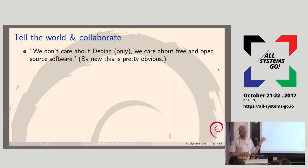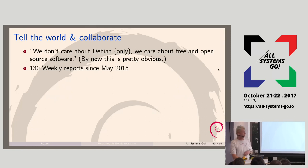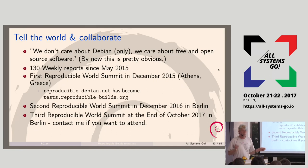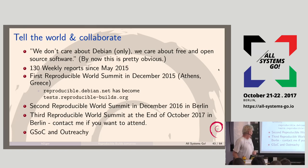Many people from Debian are in this project but we care about free software in general. We write weekly blog posts — we're at number 130 now. We've made two summits where people from 25 projects meet and discuss for three days doing brainstorming and roadmaps. We'll have another one in two weeks in Berlin — if you want to join, please talk to me, it's from Tuesday to Thursday. We also do Google Summer of Code and outreach projects.